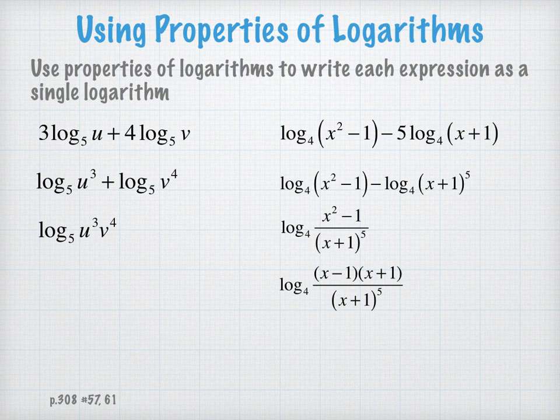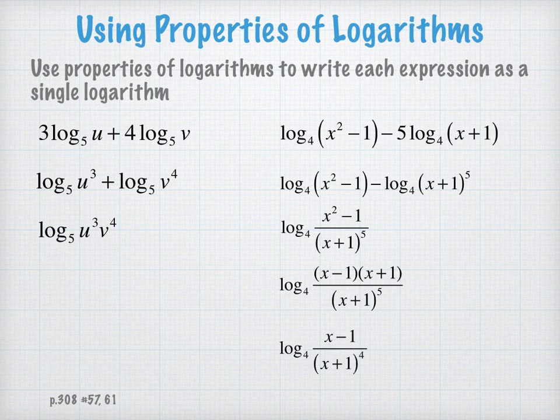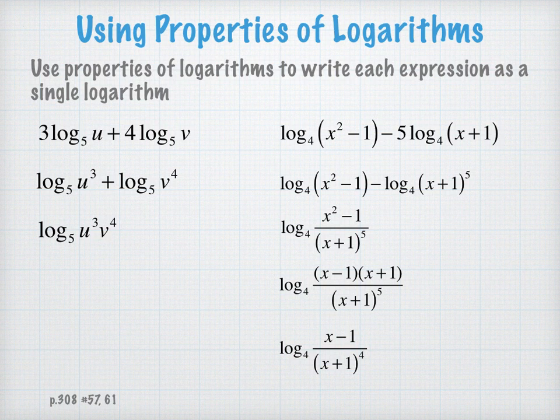Now there's a factor of x plus 1 that could cancel out of both numerator and denominator. So my final answer is going to look like this: log to the base 4 of x minus 1 over x plus 1, quantity to the 4th power.